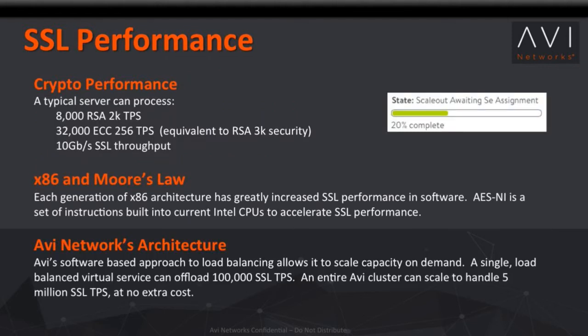As we look ahead towards OpenStack providing all of this application delivery, this has all been done within software. Avi provides a software-based application delivery controller — a load balancer. As part of being a load balancer, we're also providing SSL termination, which is pretty much a mainstream capability. The question is how do you do that in software and still keep up with a big hardware appliance? Hardware appliances sit outside of OpenStack, so you're tromboning traffic in and out of OpenStack. Avi sits inside OpenStack, inside the virtualized environment, doing SSL in software. That's one reason why we recommend getting off RSA certificates and onto elliptic curve — they're about four times faster to process.